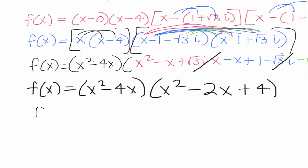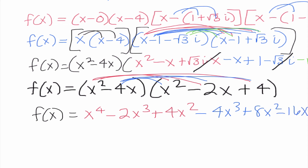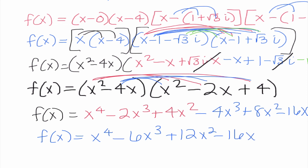Final step: x squared times x squared is x to the 4th; x squared times negative 2x is negative 2x cubed; x squared times 4 is 4x squared; negative 4x times x squared is negative 4x cubed; negative 4x times negative 2x gives 8x squared; negative 4x times 4 is negative 16x. Adding all like terms in descending order: x to the 4th minus 6x cubed plus 12x squared minus 16x.